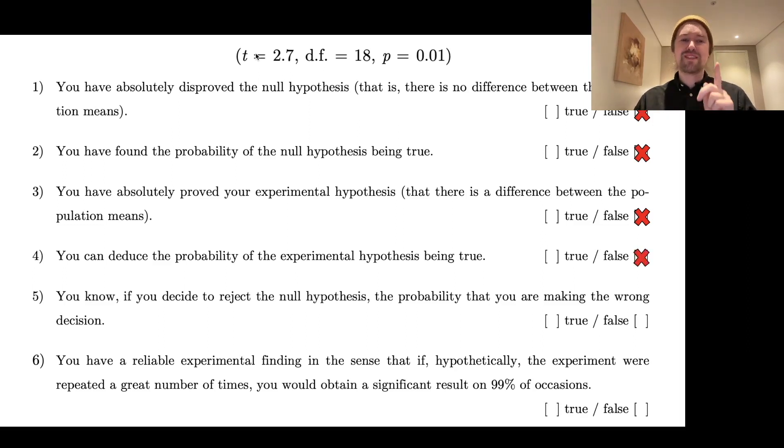Can you deduce the probability of the experimental hypothesis being true? No, but you know maybe now, if you decide to reject the null hypothesis, the probability that you're making the wrong decision. No, because you're not considering the base rate, so you don't know this. But is it the case that you have a reliable experimental finding in the sense that if hypothetically the experiment was repeated a great number of times, you would obtain a significant result on 99% of occasions? This statement is actually also false. So all of these statements were false and the only way you could kind of pass this questionnaire was to answer false on all of these.